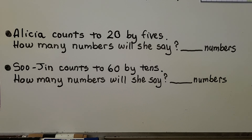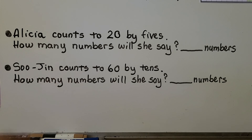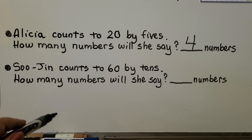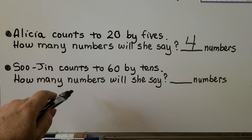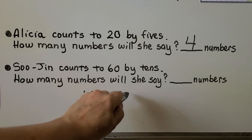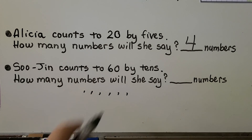Alesia counts to 20 by fives. How many numbers will she say? 5, 10, 15, 20 — that's 4 numbers she counted. Sujin counts to 60 by tens. How many numbers will she say? We can put a dot for each one: 10, 20, 30, 40, 50, 60. That's 1, 2, 3, 4, 5, 6 numbers.